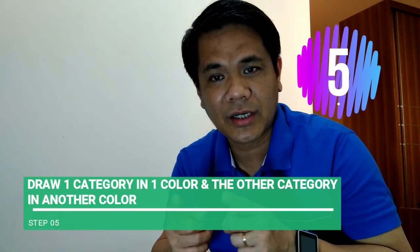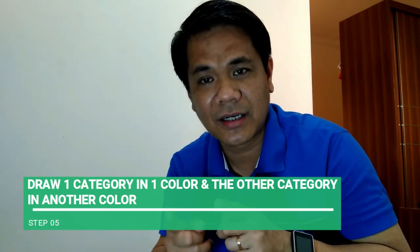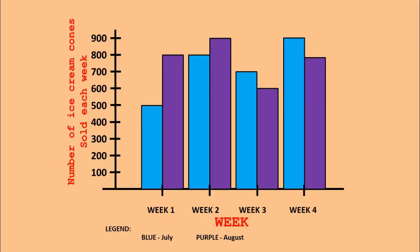Step number five: draw one category in one color and the other category in another color — let's say blue and purple. As you notice, we use two different colors to distinguish the two categories. We have a legend here, sometimes called a key. I used color blue for July and purple for August.